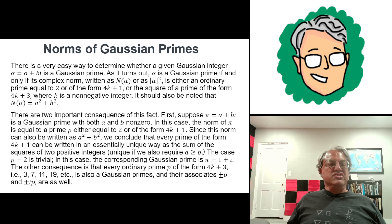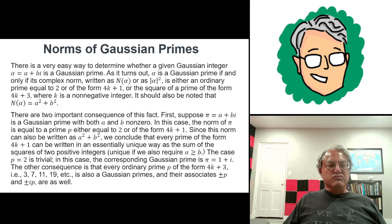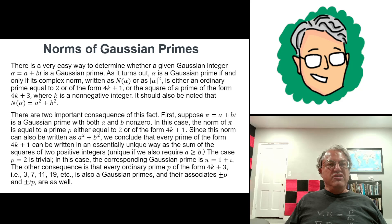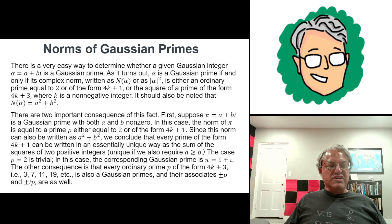There are also other types of Gaussian primes: ordinary primes of the form 4k plus 3. For instance, 3 is a Gaussian prime with norm 9, which is 3 squared. There are also 4 associates of 3: plus or minus 3 and plus or minus 3i. In general, if p is any prime of the form 4k plus 3, then p is a Gaussian prime, and so are all its associates — plus or minus p and plus or minus pi — those are all the Gaussian primes of that type. So we know what all the Gaussian primes are just in terms of their norm, and that's a very useful thing to know.